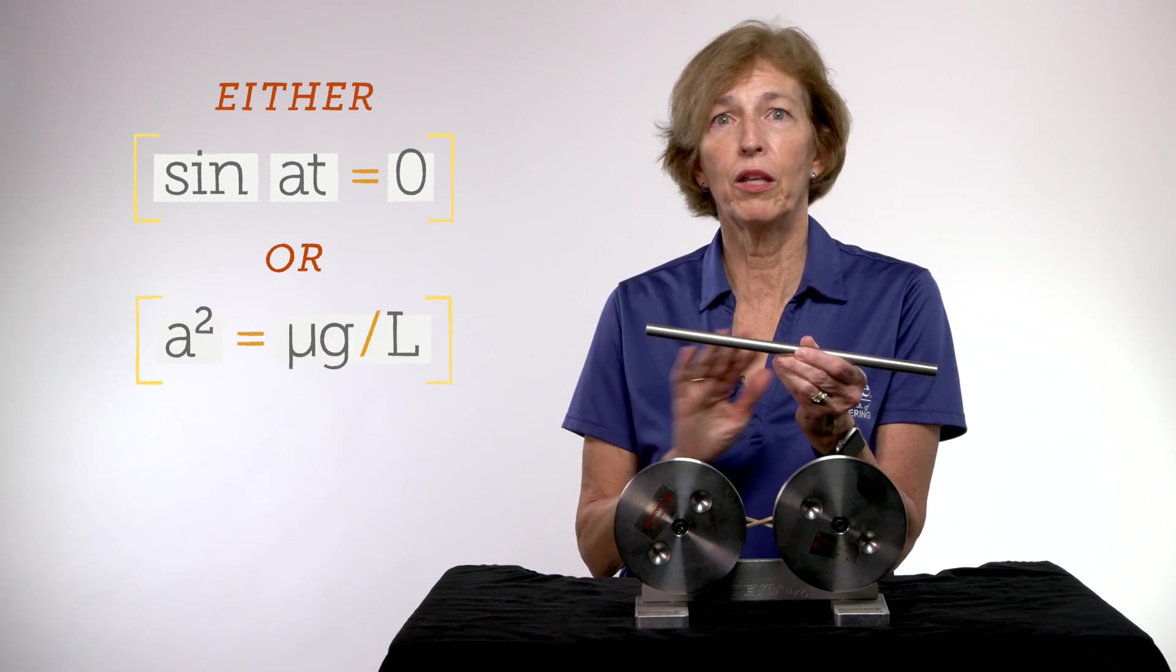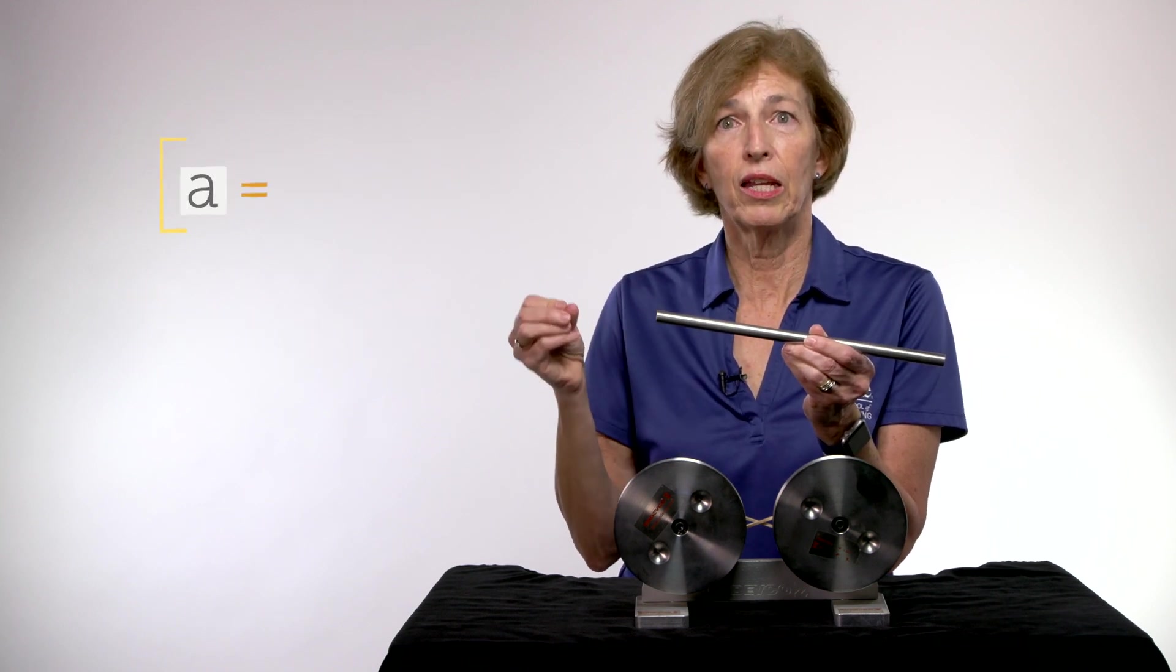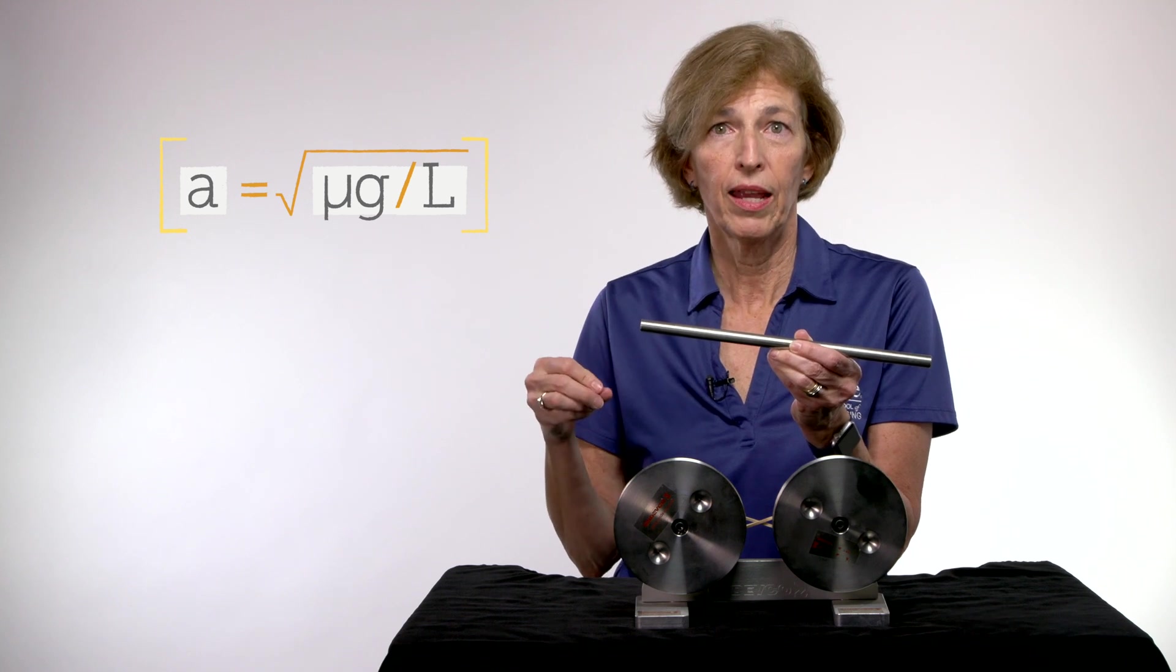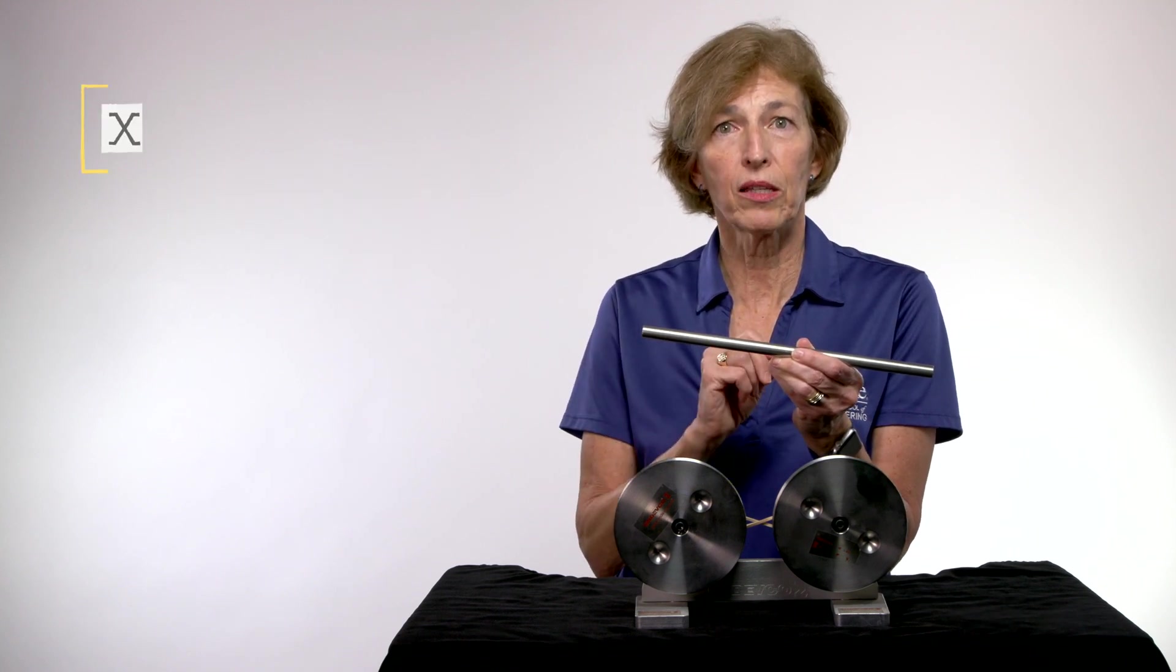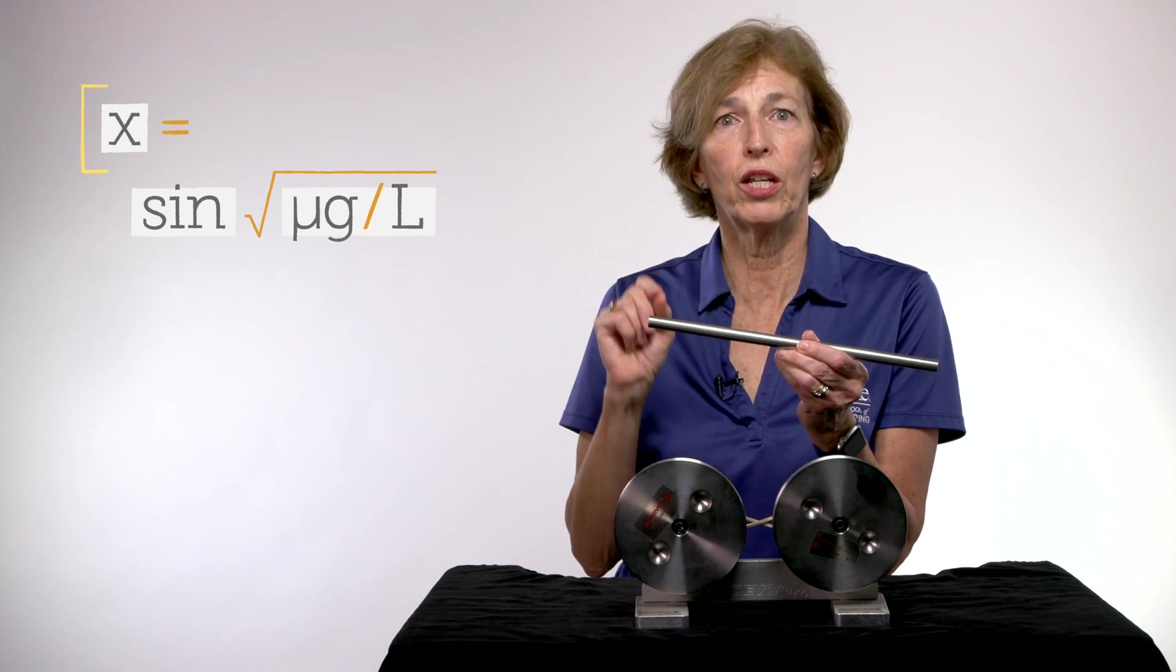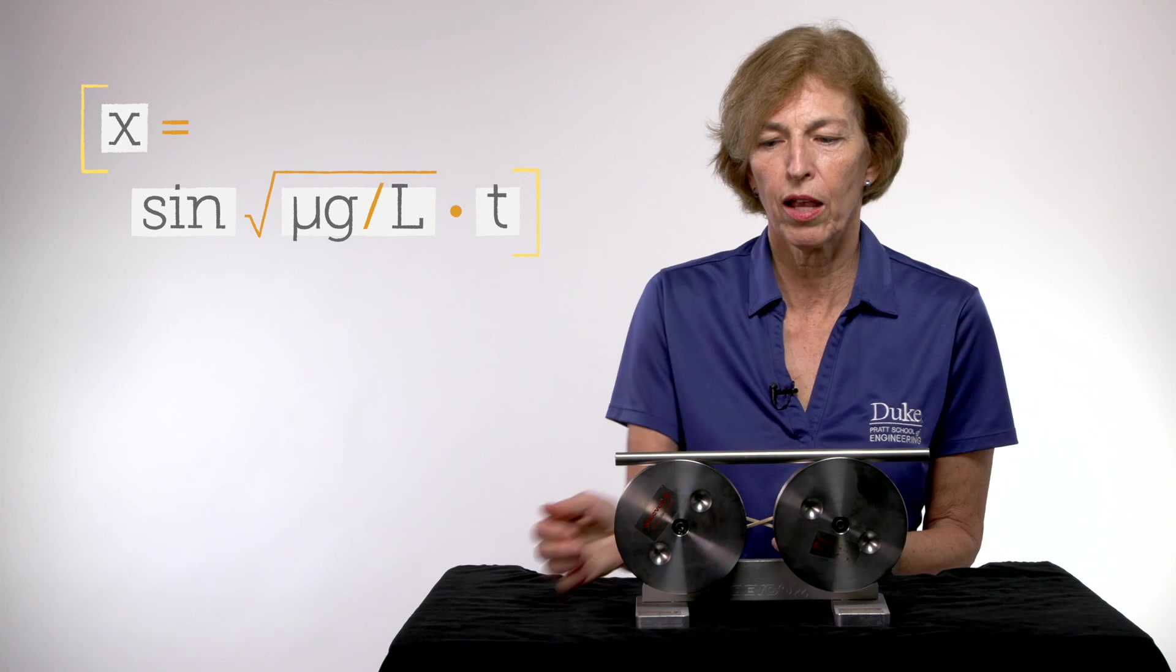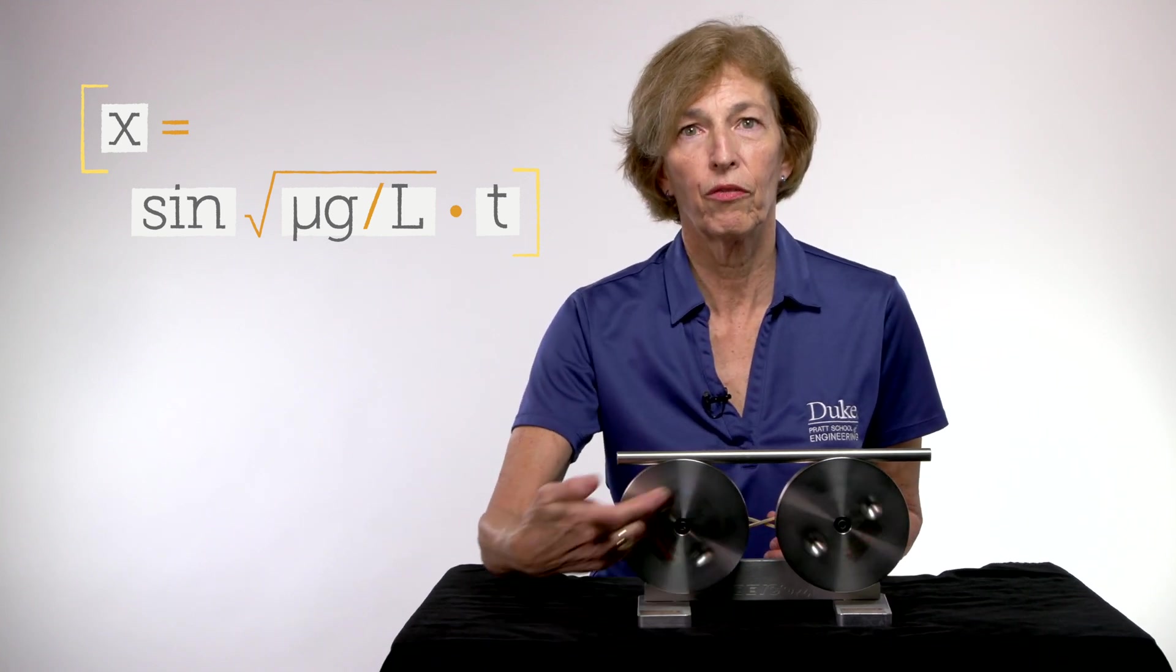The sine of AT cannot be equal to 0 for all time. That means that A is then equal to the square root of mu G over L. And we now have a function, x is equal to sine of the square root of mu G over L times time. And that is the function that describes the motion of this bar.